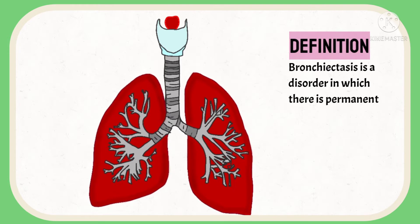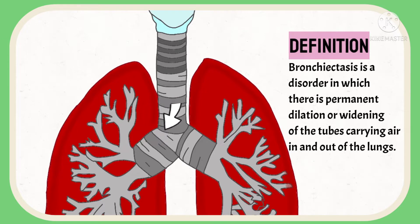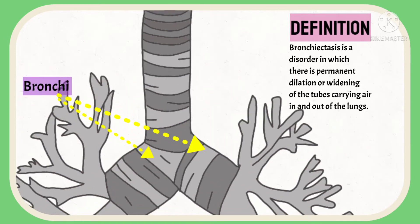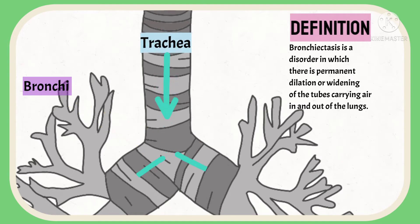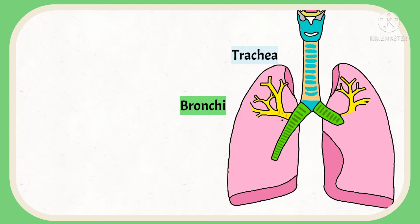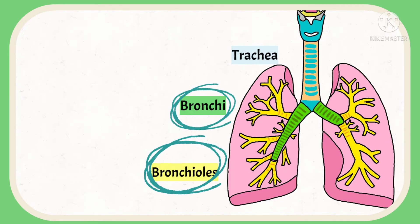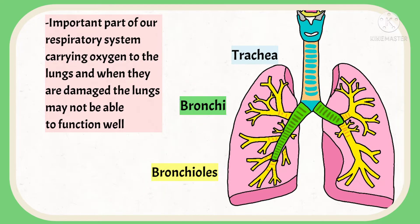Bronchiectasis is a disorder in which there is permanent dilation or widening of the tubes carrying air in and out of the lungs. These tubes are called bronchi and they are the divisions of our trachea. The bronchi enter into each side of the lungs and further divide into smaller airways called bronchioles. The bronchi and bronchioles are an important part of our respiratory system, helping carry oxygen to the lungs. When they are damaged, the lungs may not be able to function properly.